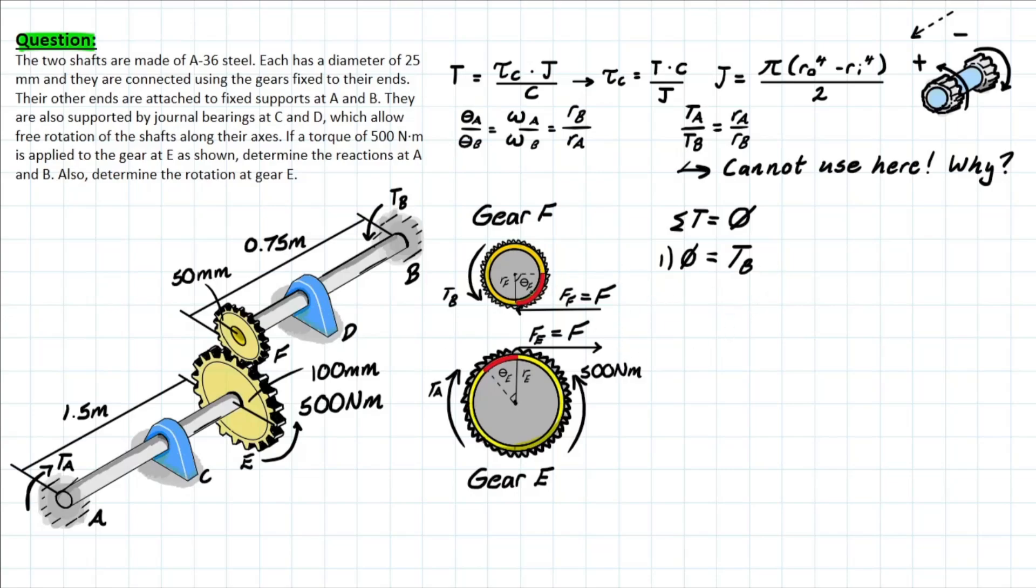But based on what we've drawn, this is going to be a negative rotation about that axis of the gear. So it's going to be F times the radius. Once again, torque is just a fancy moment, so we're taking force times distance here. The distance is going to be the radius, which is 0.05 meters based on what's given.